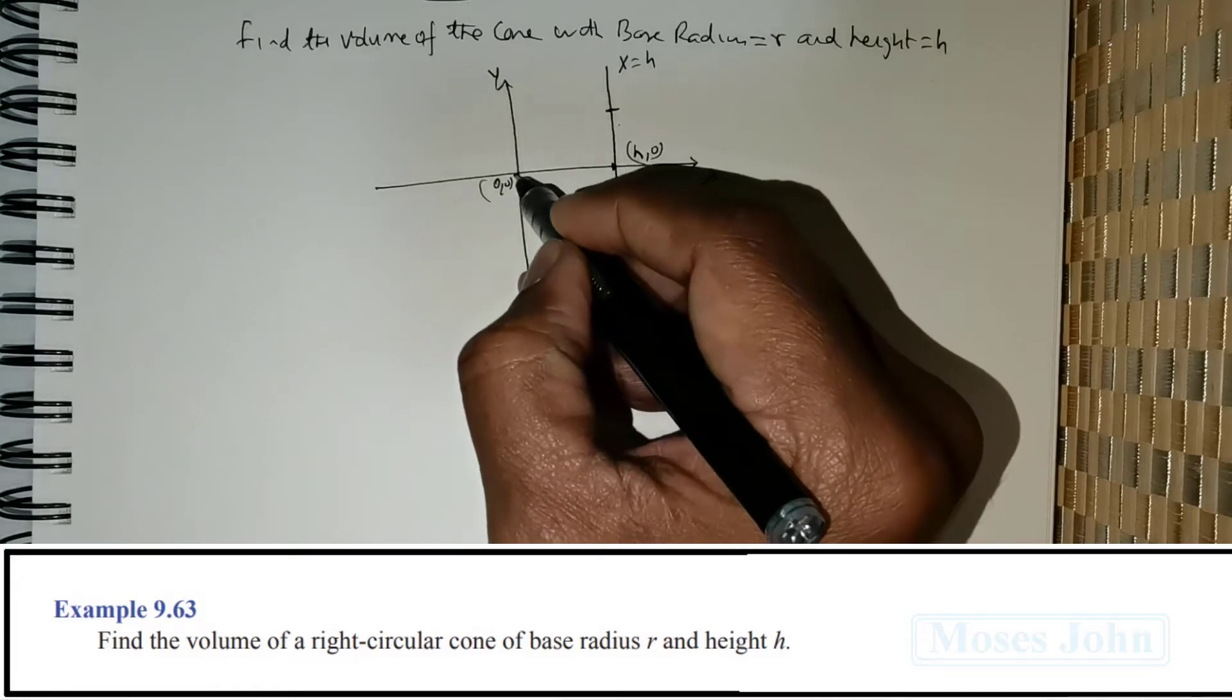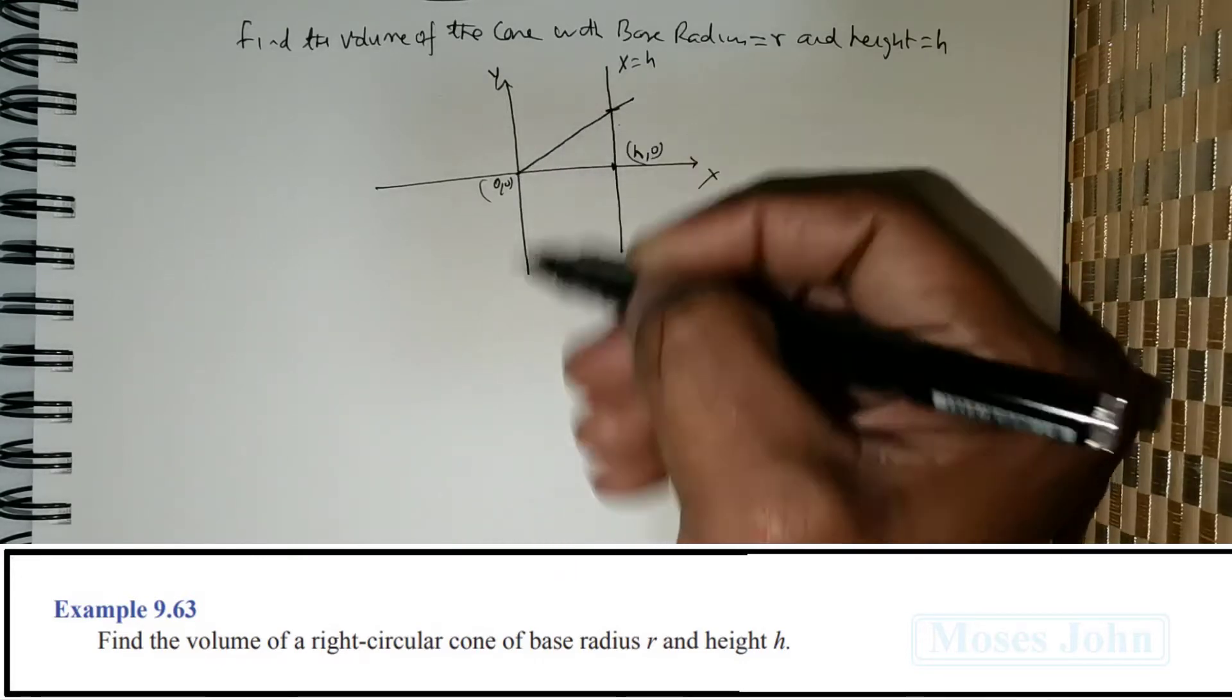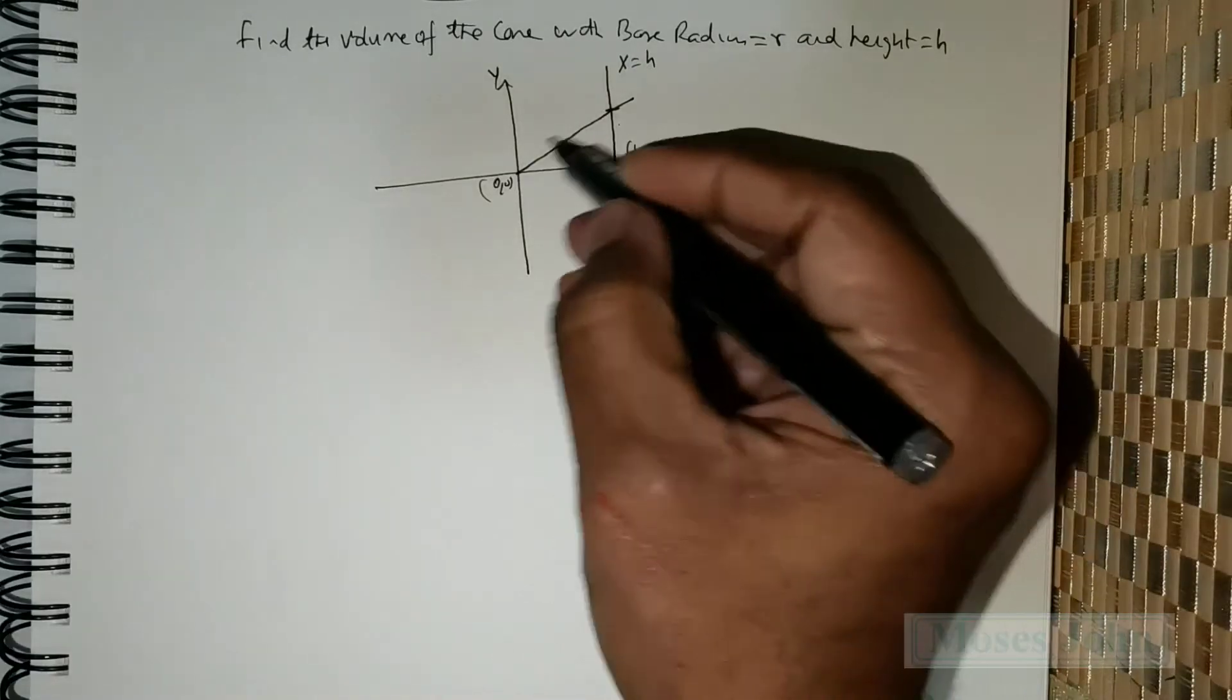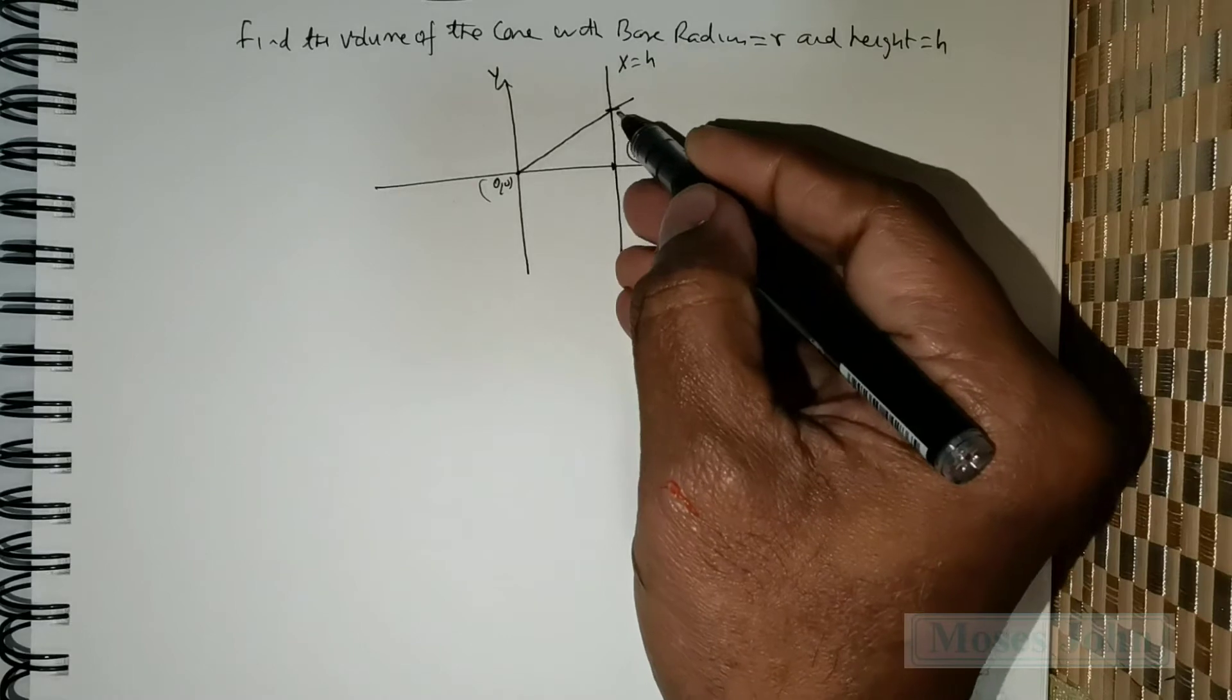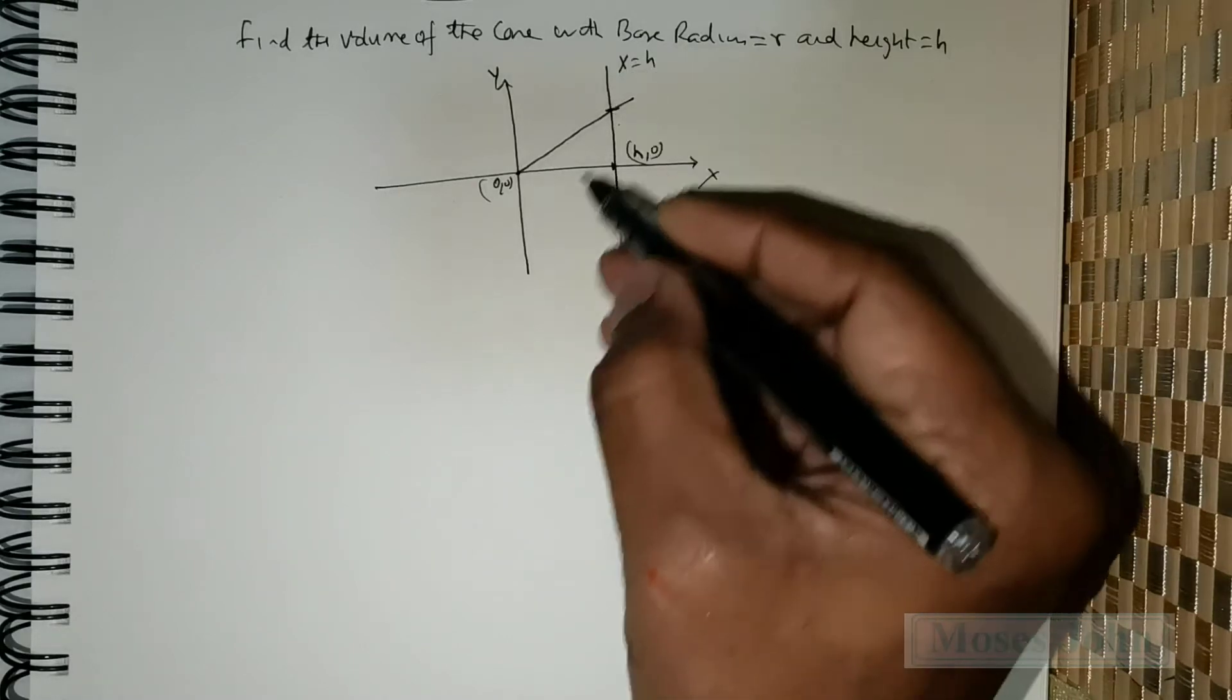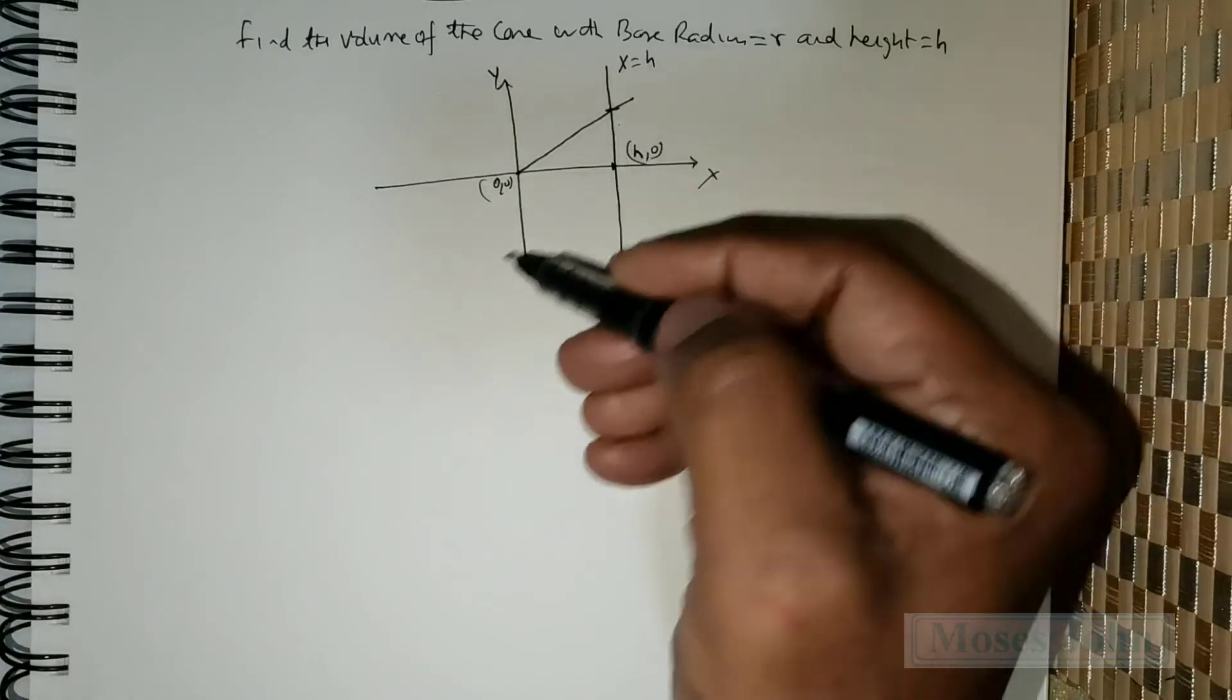Now the line that we are trying to revolve will be this line that connects the origin with a point on x is equal to h. So we will be revolving this line and generating the volume.